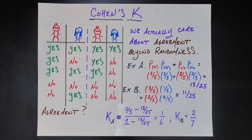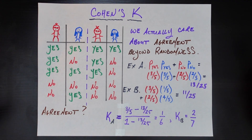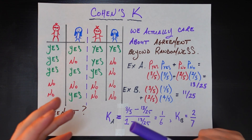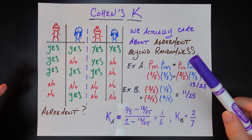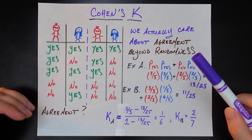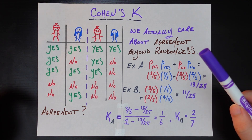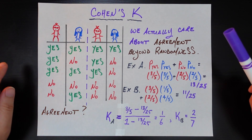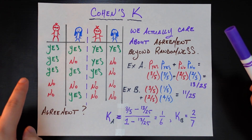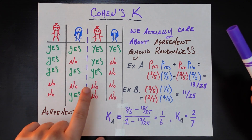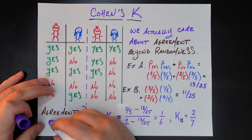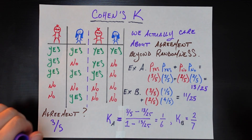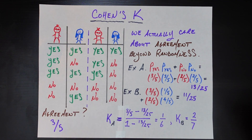One thing we might care to do is understand the level of agreement between these two folks. Do they usually agree? Do they usually disagree? How do we measure that? The most natural, straightforward, naive way is to go candidate by candidate, count the number of times they agreed, and divide by the total number of candidates. They agreed on the first, third, and fourth candidates — three agreements out of five for this set of ratings, which we'll call A.